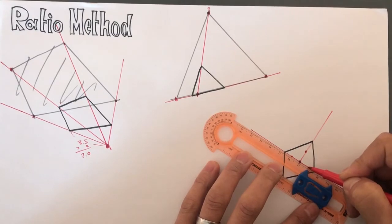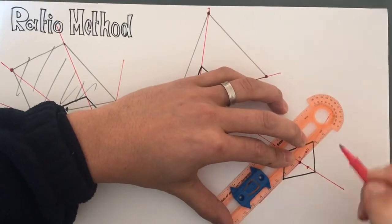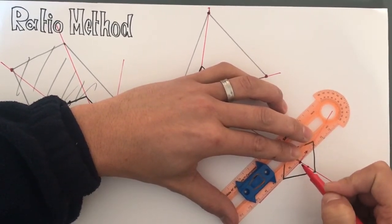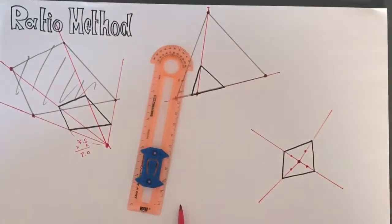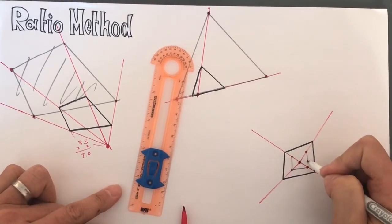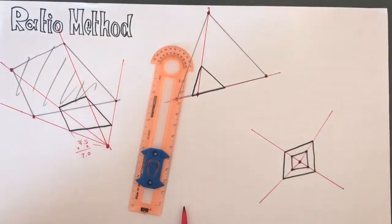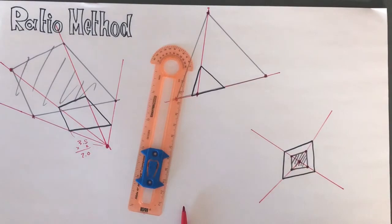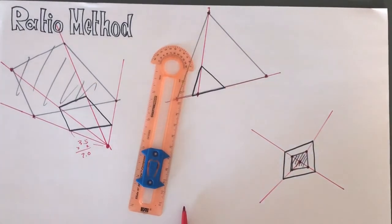Make it a half because we are scaling with half. So this is 2.2. So I'm going to take one point right here. Then connect the dots and connect the points. I should have used the ruler. So here is the smaller version of it. I should be like a little this way. That's the ratio method.